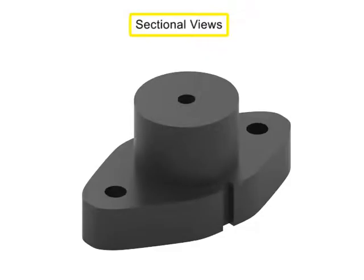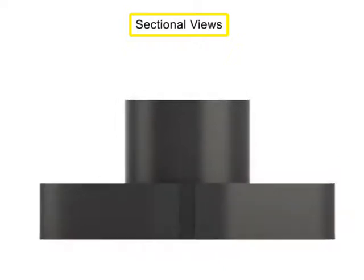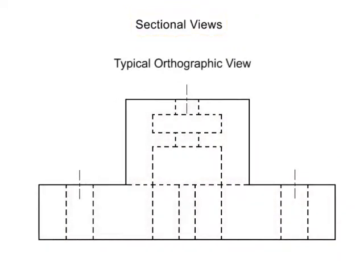Sectional views are very useful when there is geometry on the interior of a part that's difficult to understand from looking at typical orthographic or isometric views. They are also very useful in dimensioning the drawing. Sectional views allow us to dimension the interior of a part without dimensioning to hidden lines, which is considered a poor convention.